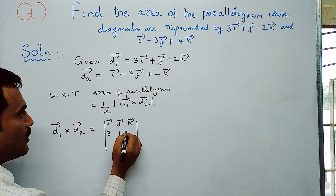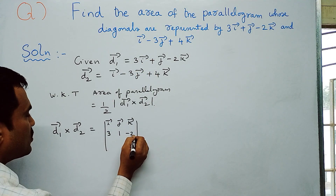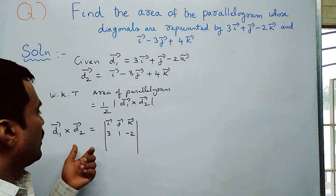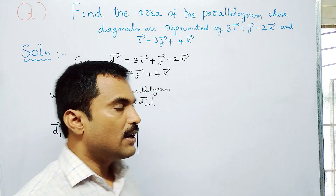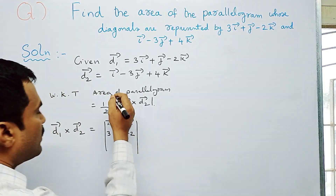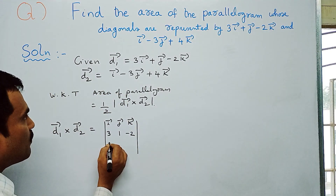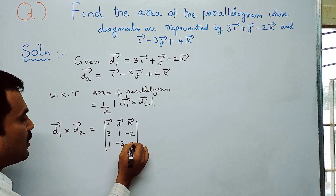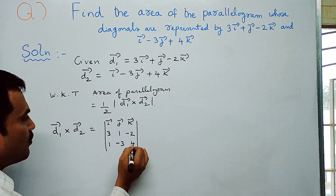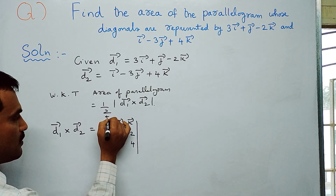The coefficients of d1̅ are: i̅ coefficient is 3, j̅ coefficient is 1, and k̅ coefficient is −2. The third row contains the coefficients of d2̅: i̅ coefficient is 1, j̅ coefficient is −3, and k̅ coefficient is 4.